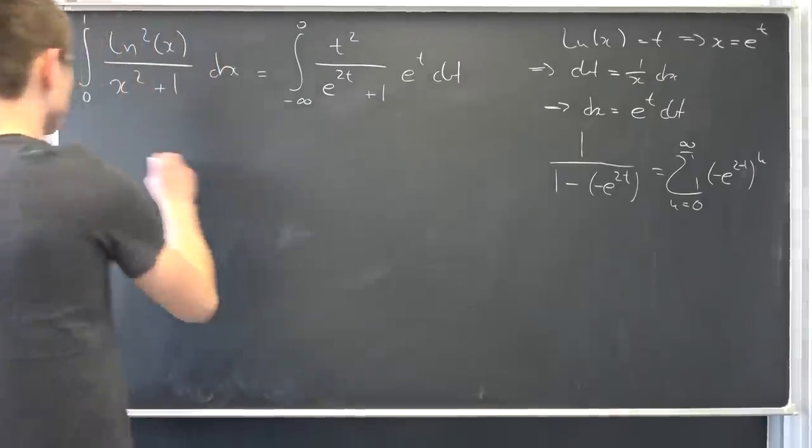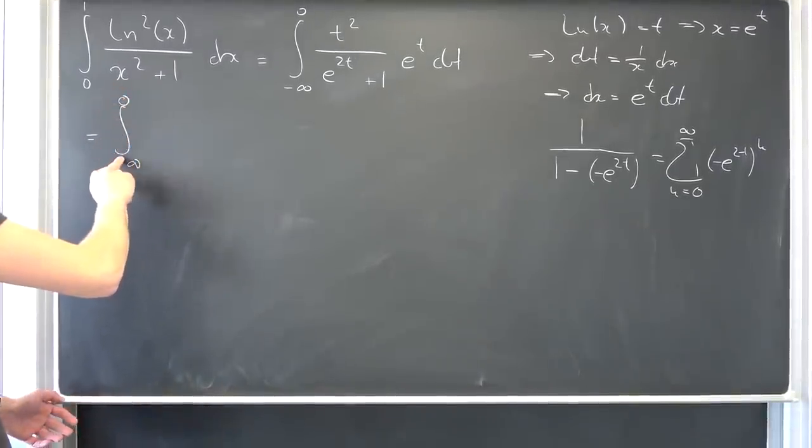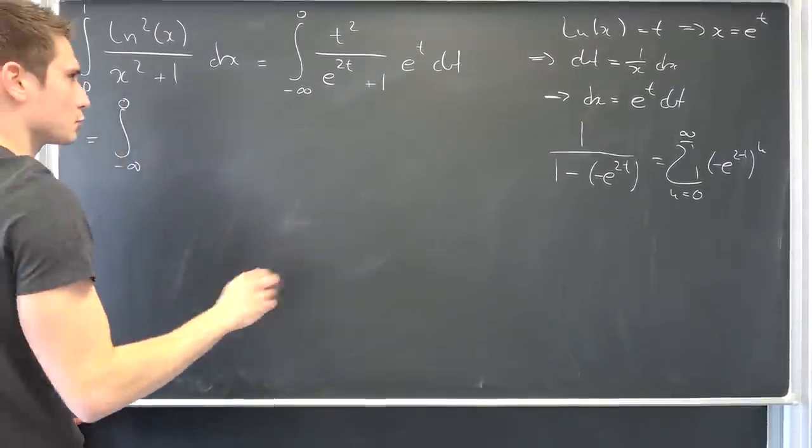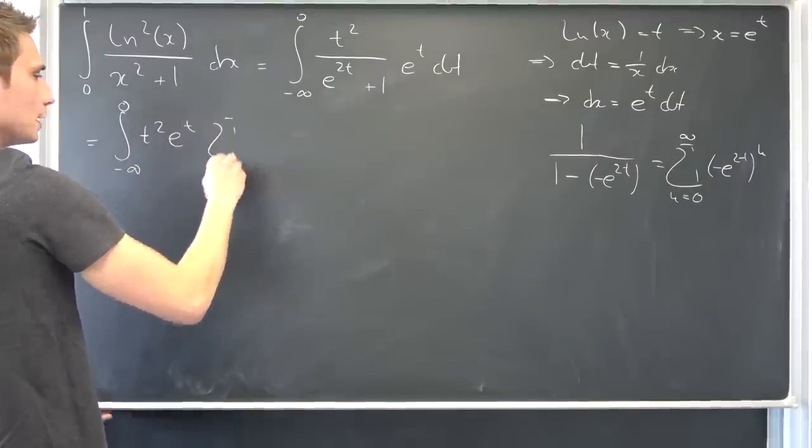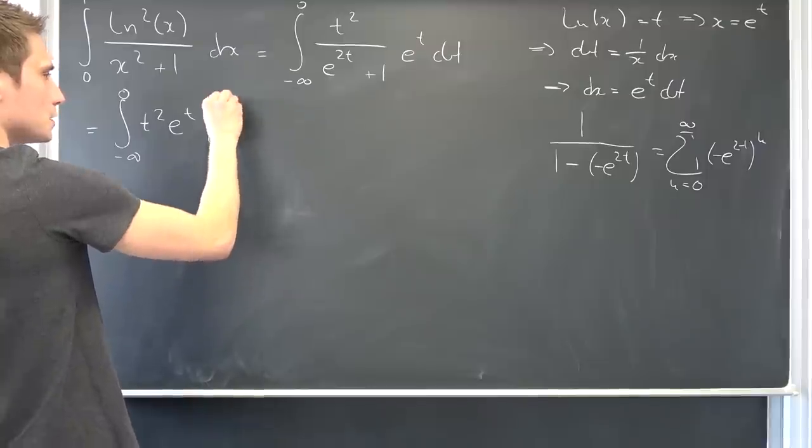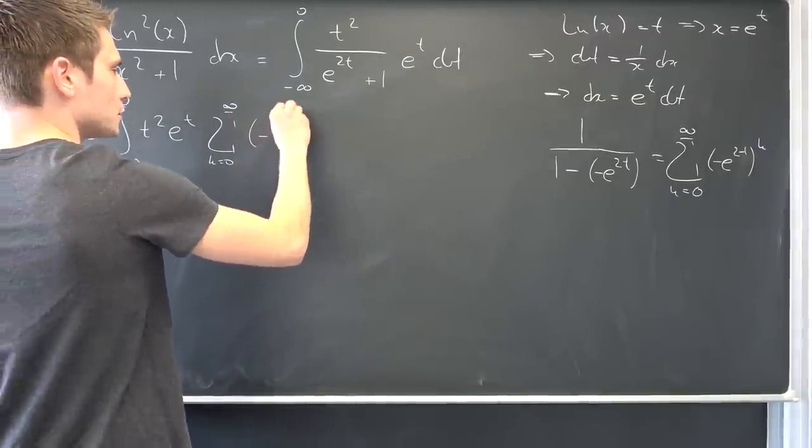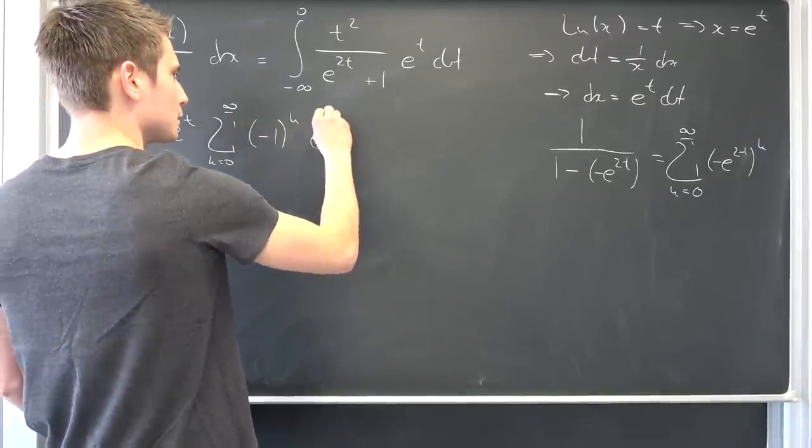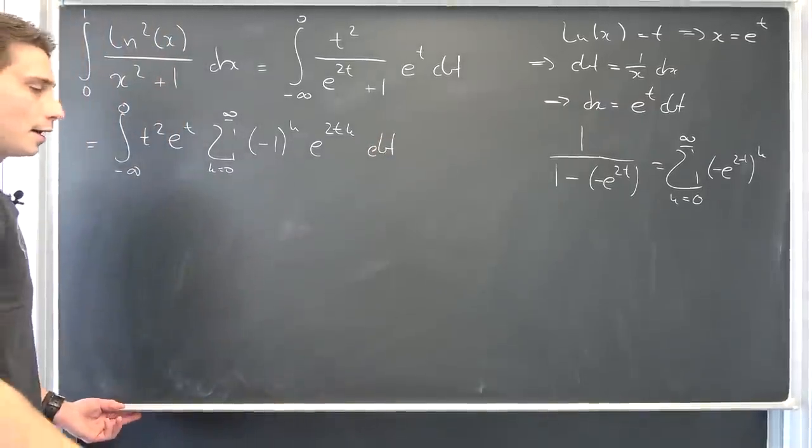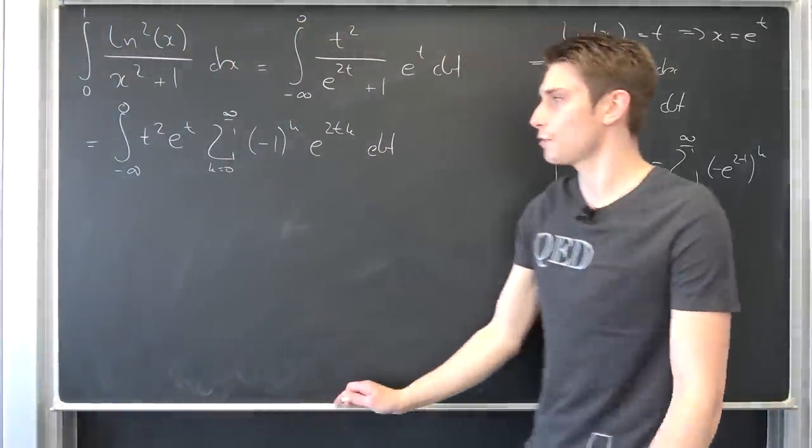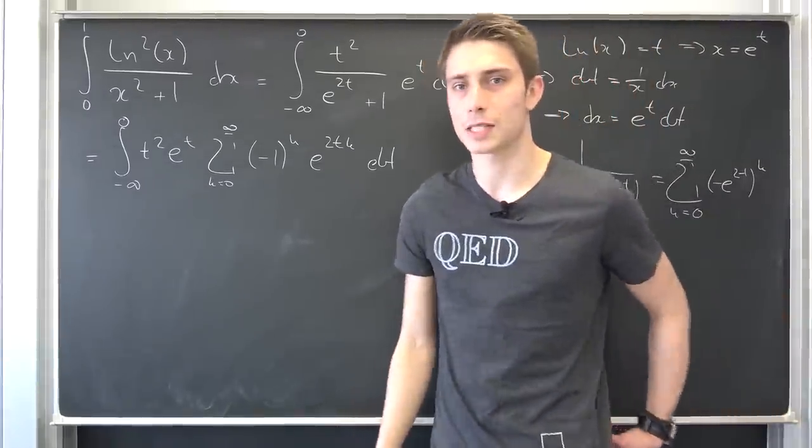We can plug this chunk into here. Now we are going to get an integral running from negative infinity to 0. Then we have t squared, e to the t, infinite sum running from 0 to infinity, and then we have negative 1 to the kth power e to the 2 times t times k, integrated with respect to t.